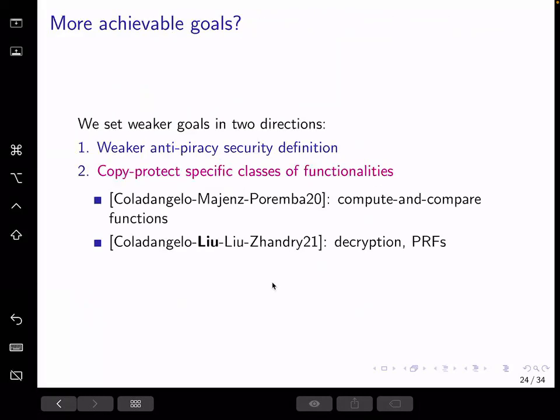So in the face of this barrier, the next achievable directions are, first, consider weakening the security notions. Are there weaker but meaningful security notions for quantum copy protection that we can do better? And the second direction is, of course, we don't relax the security requirement, but we consider copy protecting specific and smaller classes of functions. For example, there are some follow-up works, which gives construction for copy protecting point functions and extending to compute and compare functions in the random oracle model, and copy protecting PRFs and decryption.